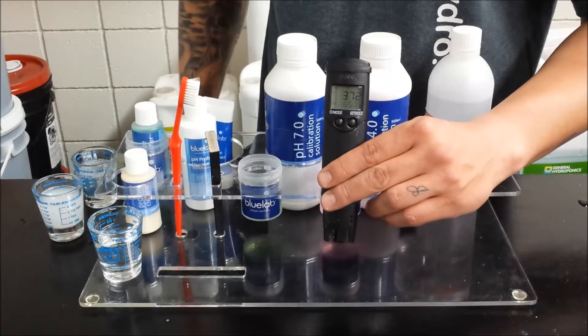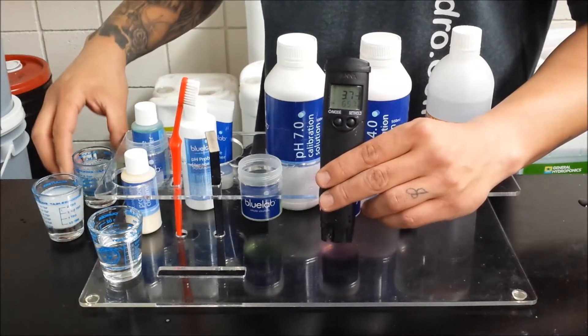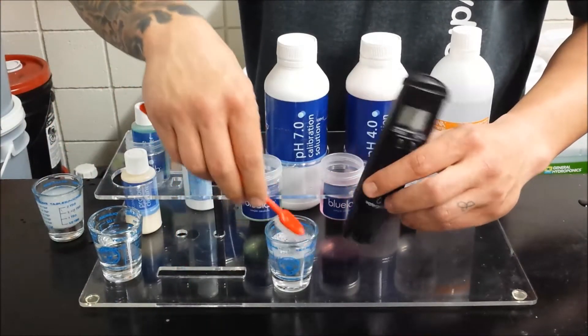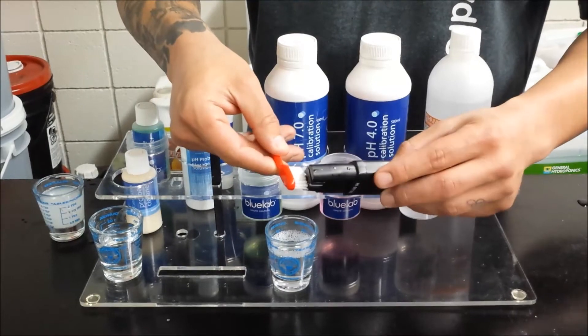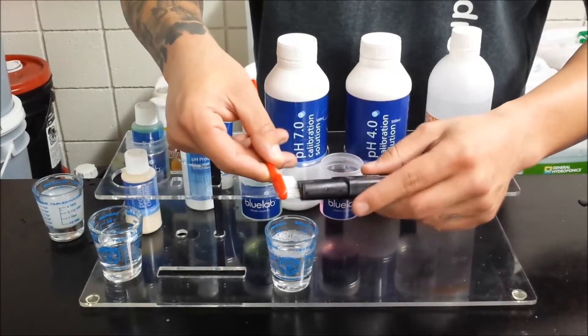First thing you want to do is make sure your combination meter is cleaned before calibration. So we got some soapy water here and a toothbrush. You can twist it into the bristles for the pH probe.